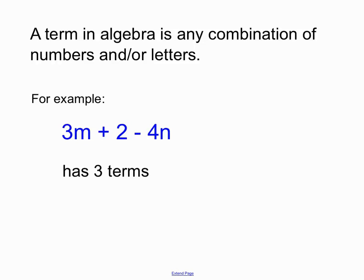Here we have three terms listed: 3m, a normal everyday plus 2, and what we'd call a negative term, negative 4n. So three chunks there and they're each called terms.